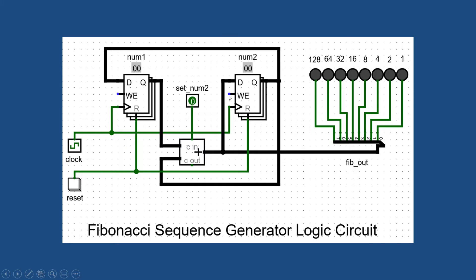And at every posedge clock, num1 becomes num2. And then here's the adder. So fib_out becomes num1 plus num2. And then fib_out is also fed back into num2 at the posedge clock. And here's the binary output that will convert to decimal to go along with the sequence.